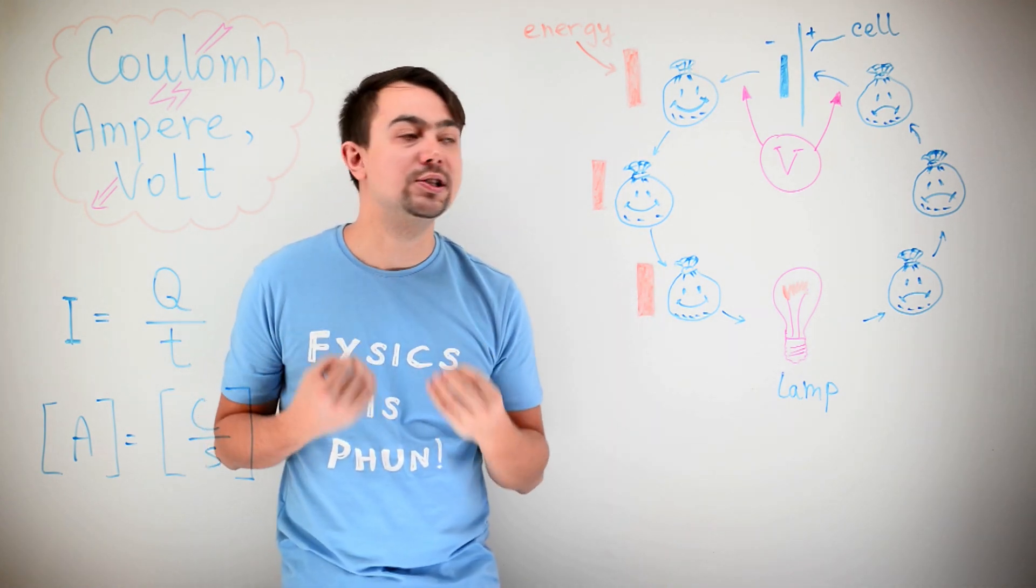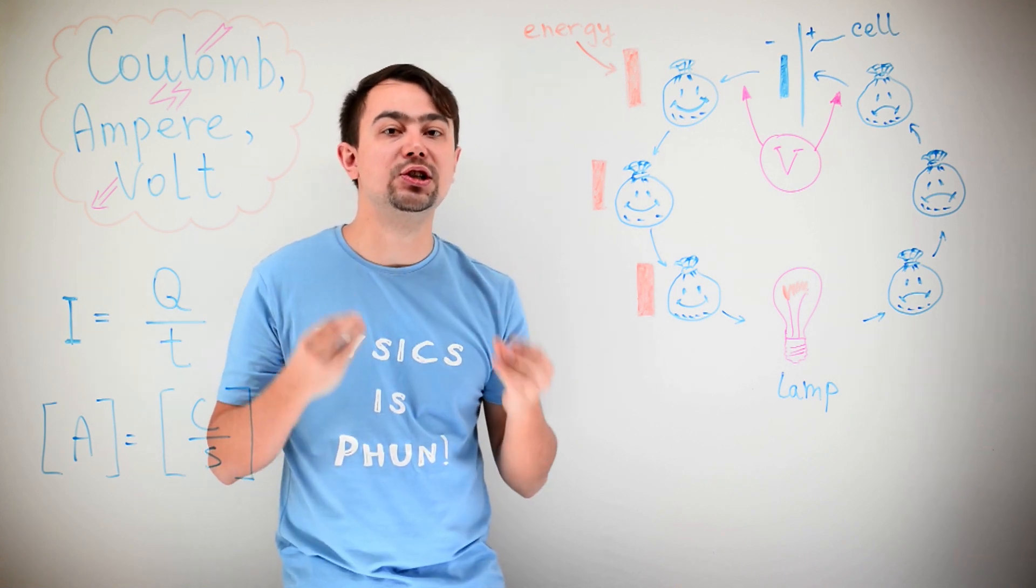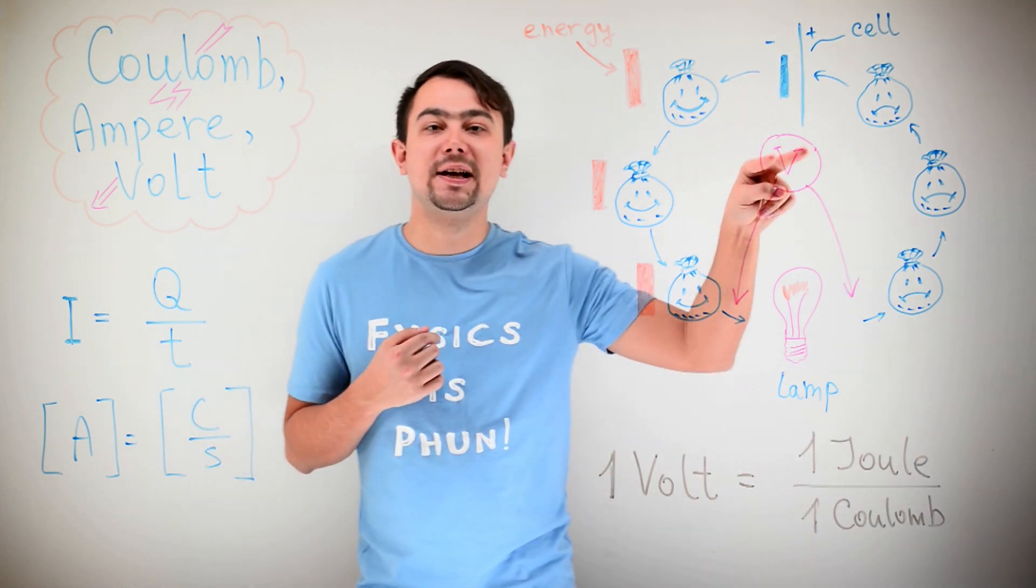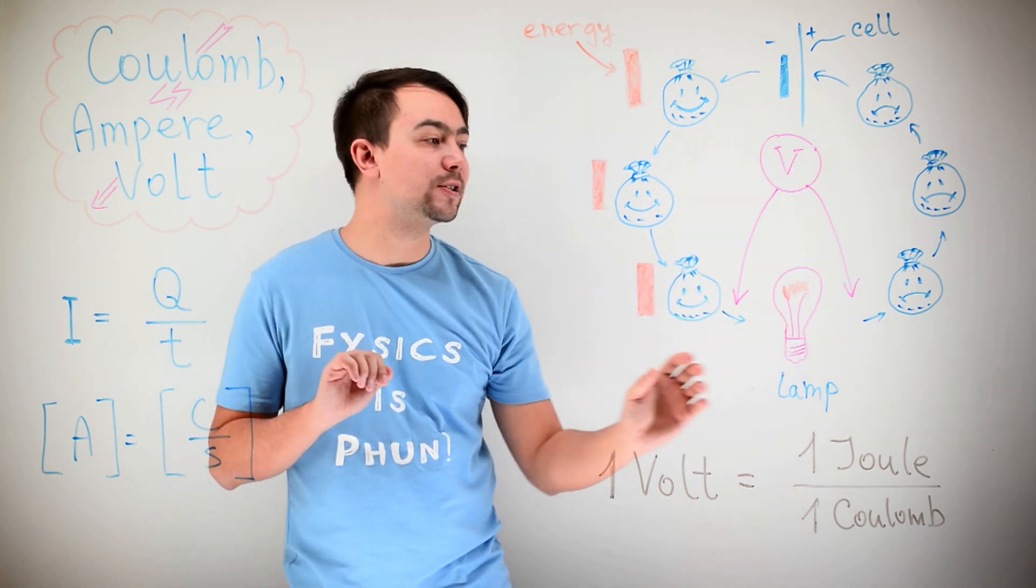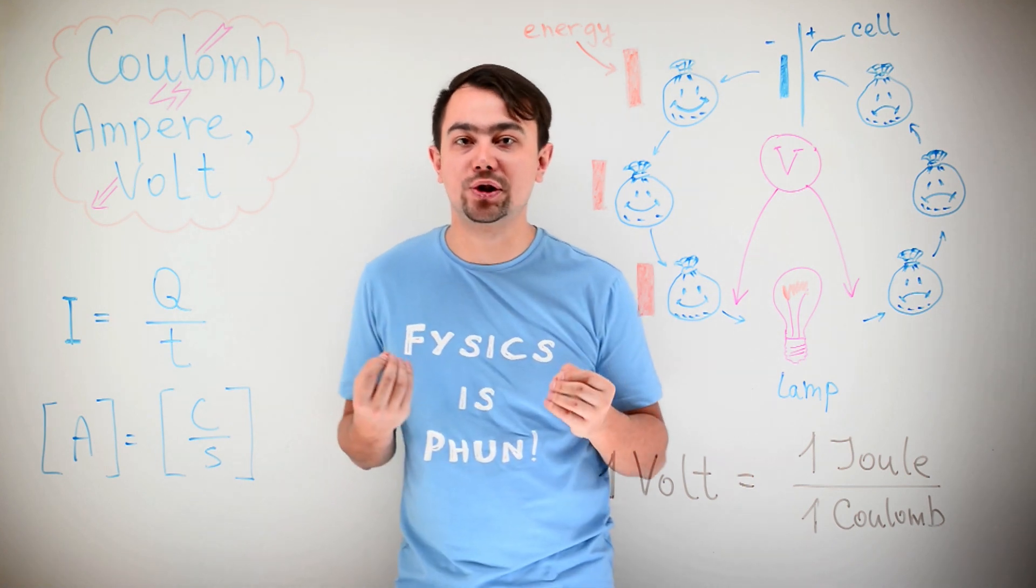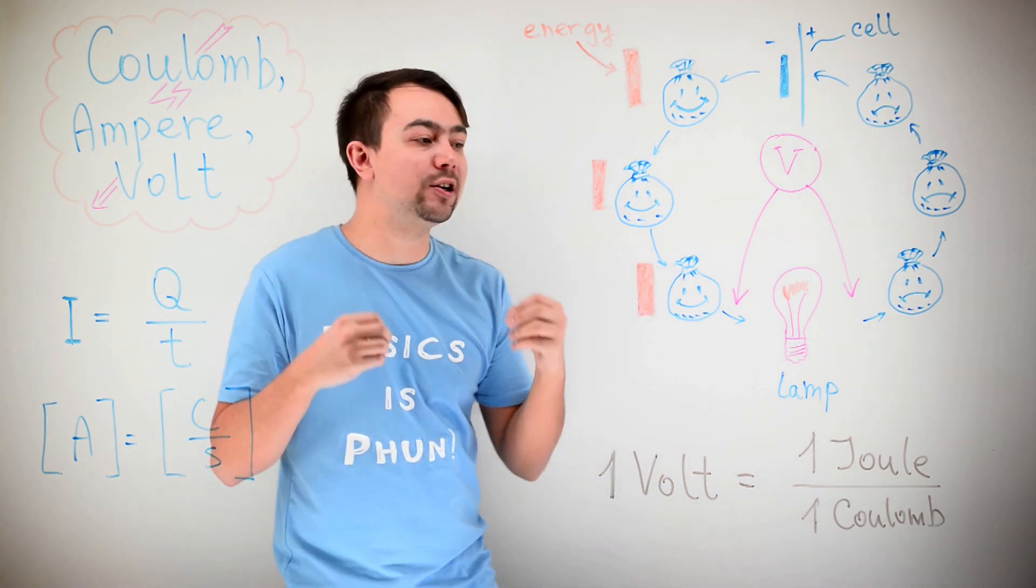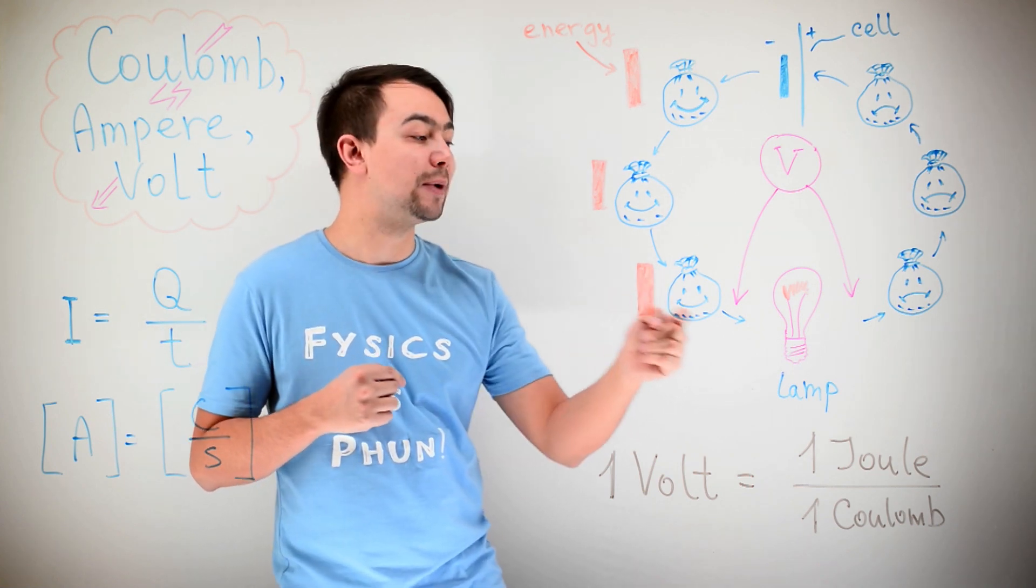The voltage is how many joules of energy we give to each Coulomb. If we connect the voltmeter to the lamp, we will measure the difference in energy before and after the lamp. So, we will measure how many joules of energy is lost by each Coulomb of charge as it passes through the lamp. And this is also voltage.